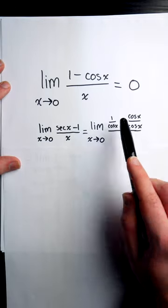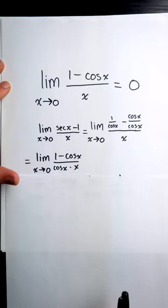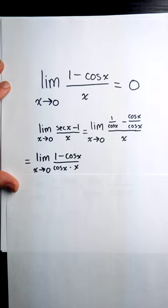Secant is 1 over cosine. 1 is cosine over cosine. So you can write it like this and then combine those fractions to get the limit of 1 minus cosine x over cosine x times x with x approaching 0.